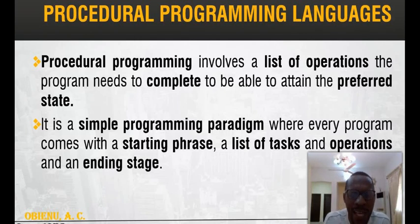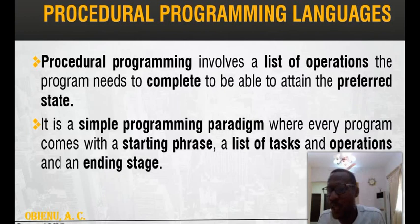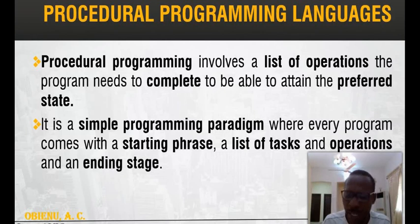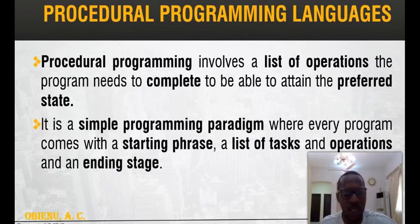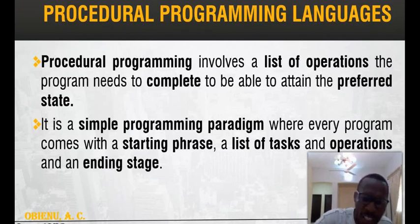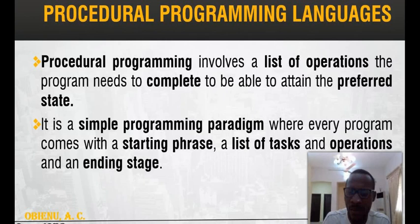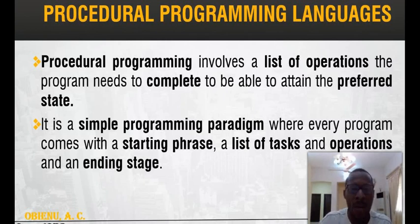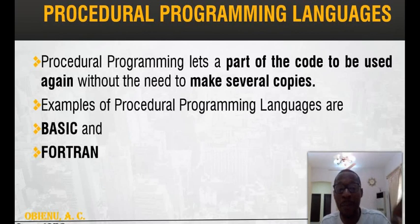This program has a starting state, a list of tasks and operations, and an ending state. For example, as seen in a flowchart: Start → Receive input → Add two numbers → Give output. You must have a starting point, complete the list of tasks and operations, before reaching the ending state. Examples of procedural programming languages include BASIC and FORTRAN. For this class, we will be considering BASIC.